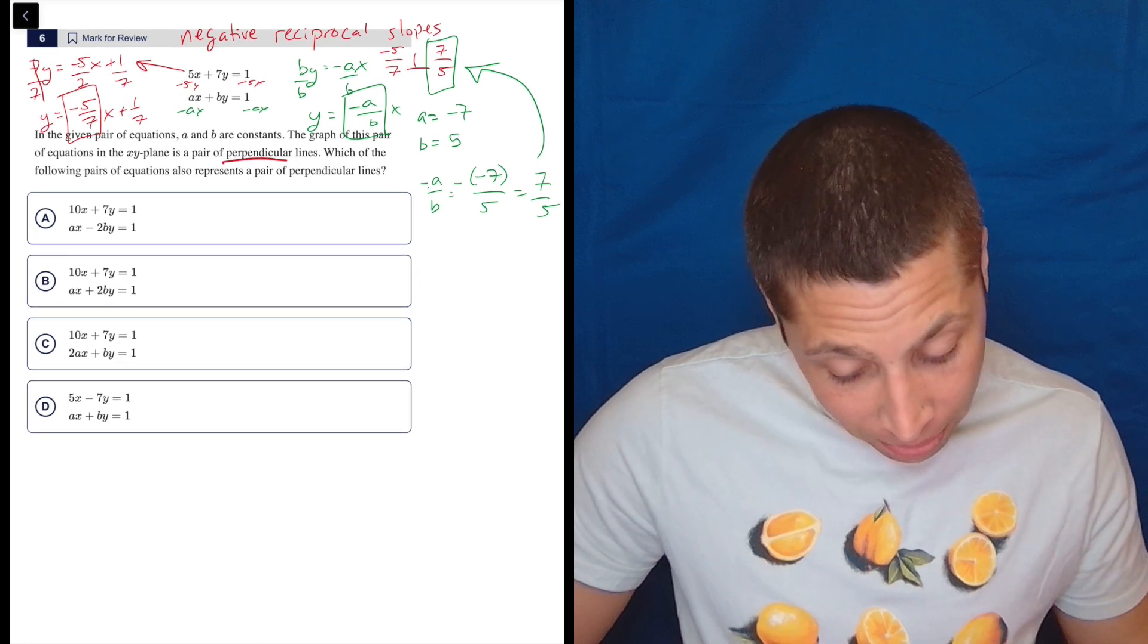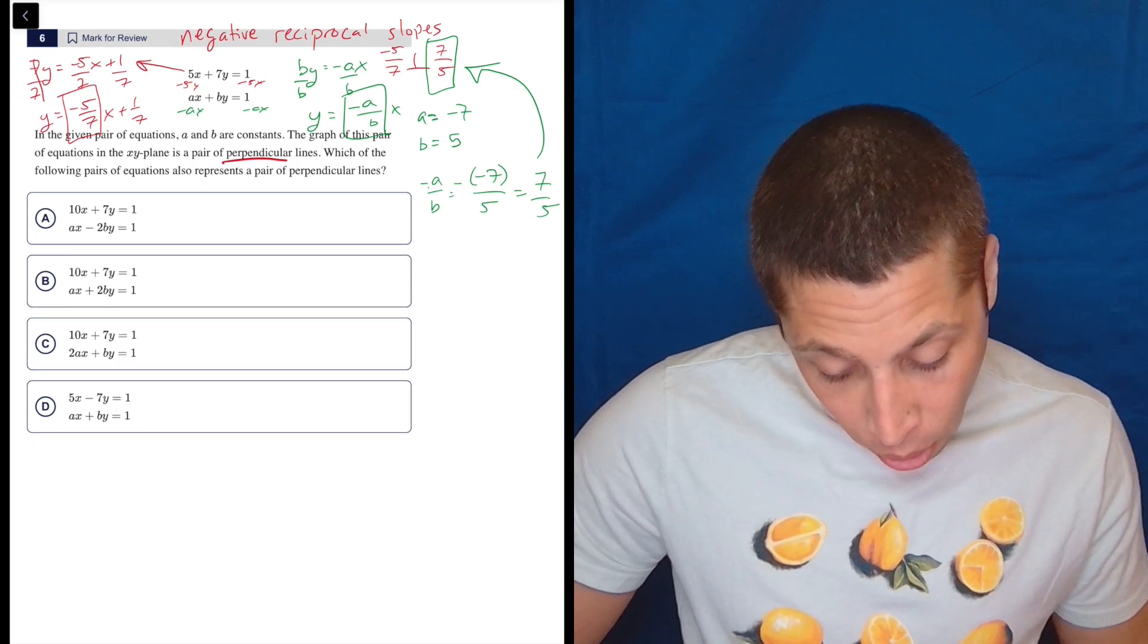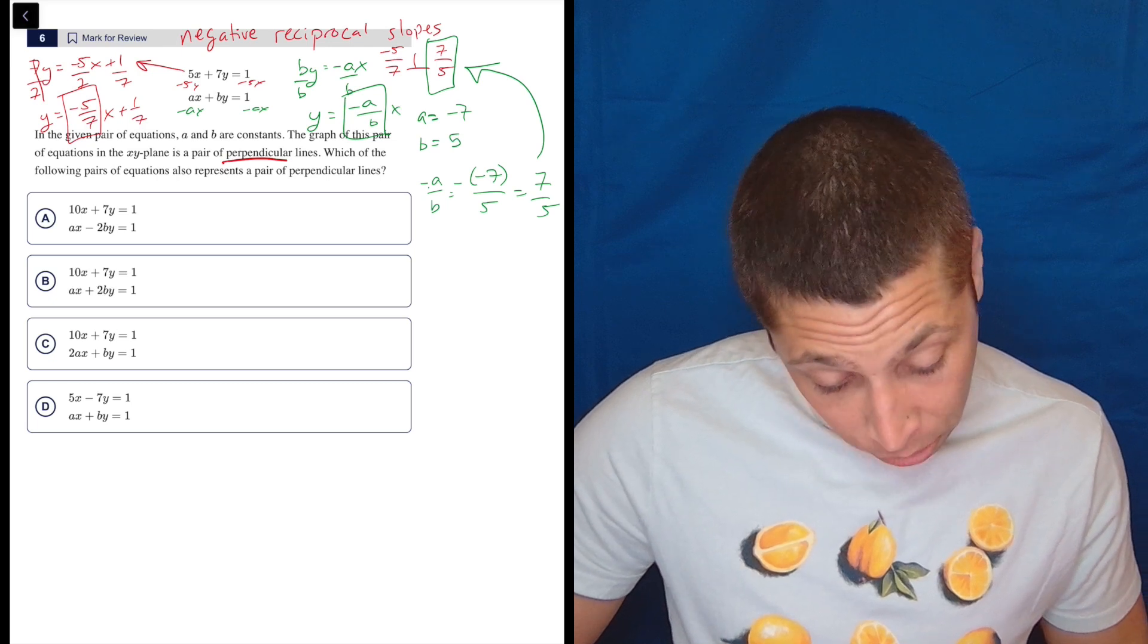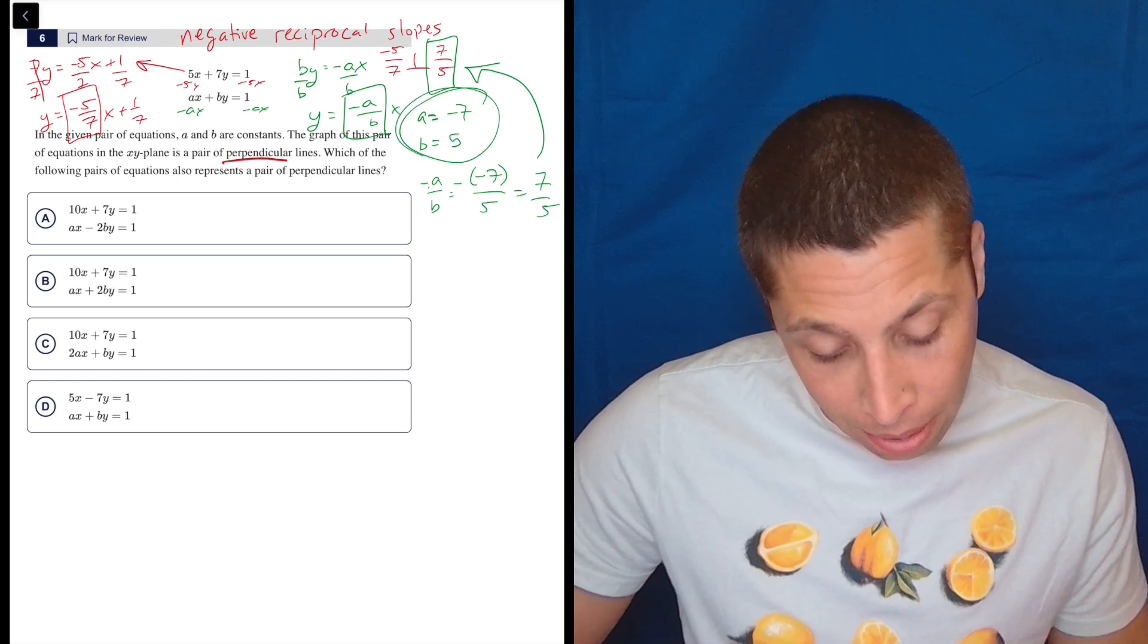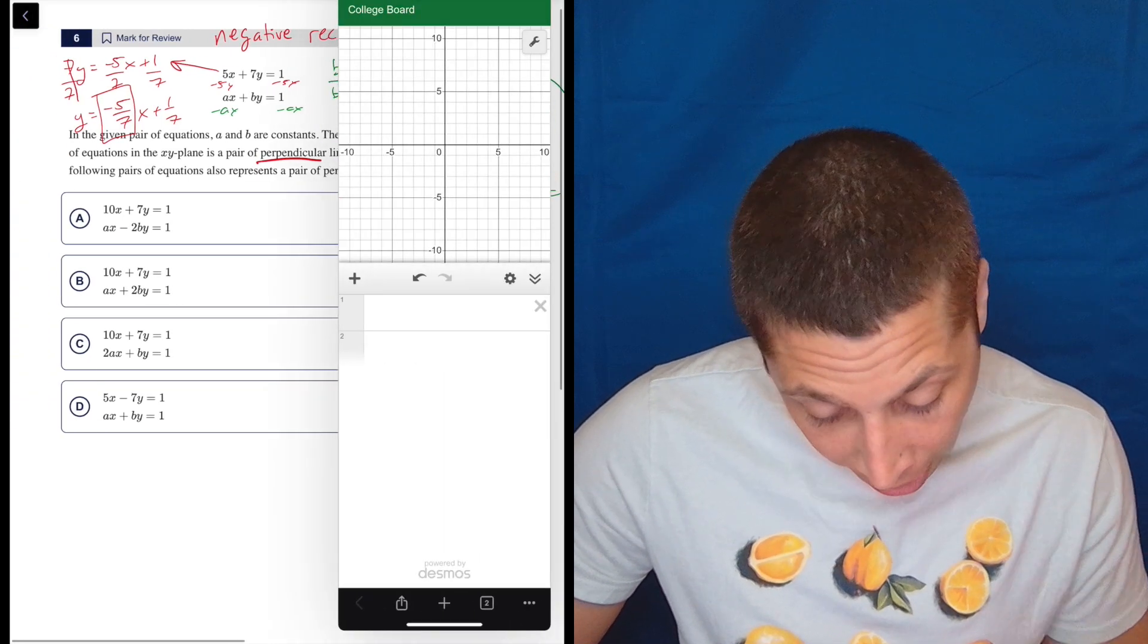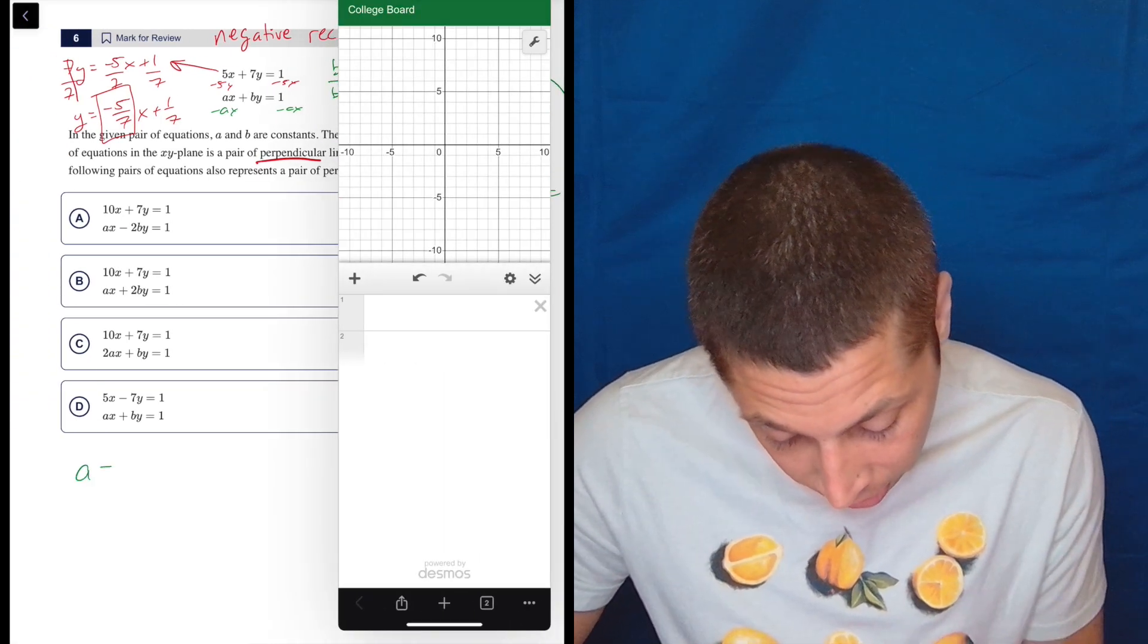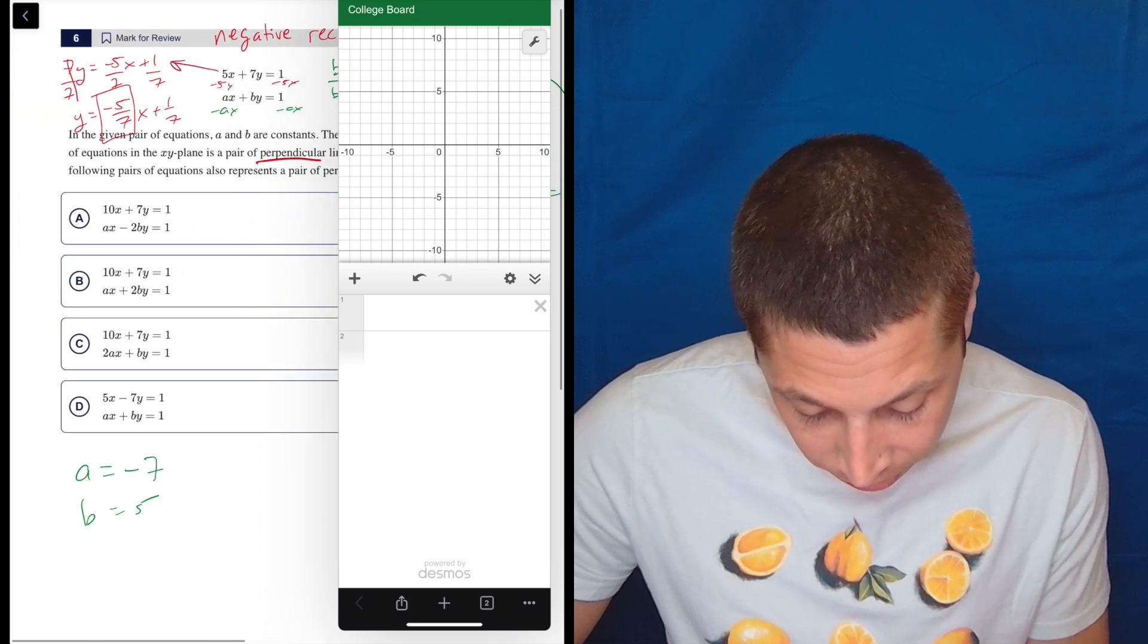Now the same thing needs to happen in these equations. In this case, I don't know. I might just go to Desmos here. And now knowing the values of a and b, I might just try to graph these things. So let's do that. Let's write it here. So what did I say? A is negative 7. B is 5.